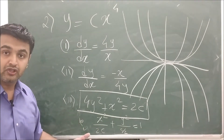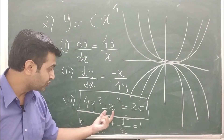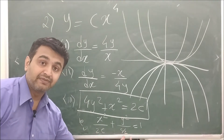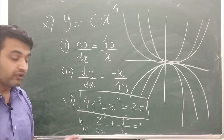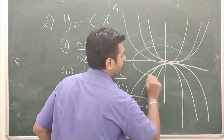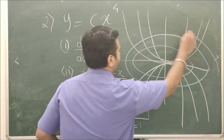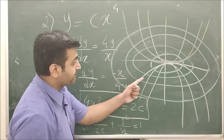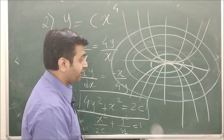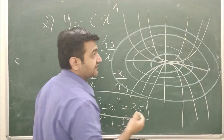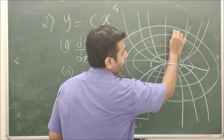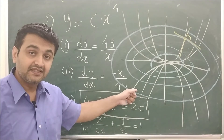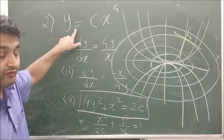Note that c will always be positive because the left-hand side is positive, so c > 0. Since 2c is bigger than c/2, you get horizontal ellipses. These ellipses are orthogonal to the given parabolas. You can verify by taking any point of intersection and drawing the tangent lines — the angle will come out to be 90 degrees. Therefore, this family of ellipses are the orthogonal trajectories of the given set of parabolas.